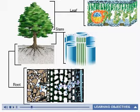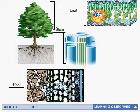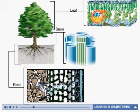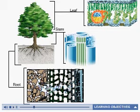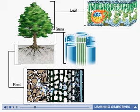Water passes into the xylem and moves upward through the root and into the stem. Mineral ions are pumped into the xylem by active transport. Water and dissolved minerals continue upward through the stem and into the leaves.